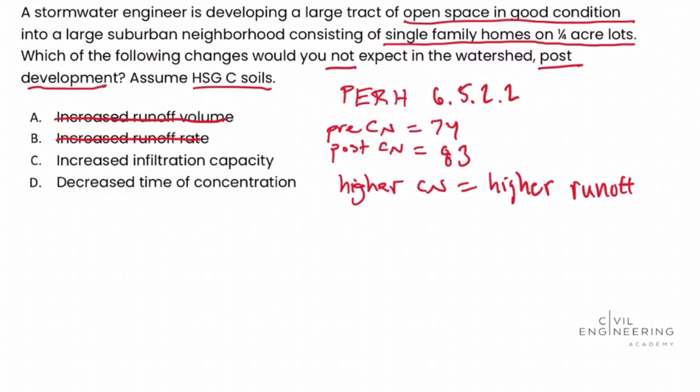Answer choice C is increased infiltration capacity. Infiltration refers to the amount of rainfall that soaks into the ground versus runs off. If we have higher runoff, we would expect decreased infiltration capacity — not increased. So answer choice C is potentially something we would not expect in the watershed, making it a candidate for the correct answer.